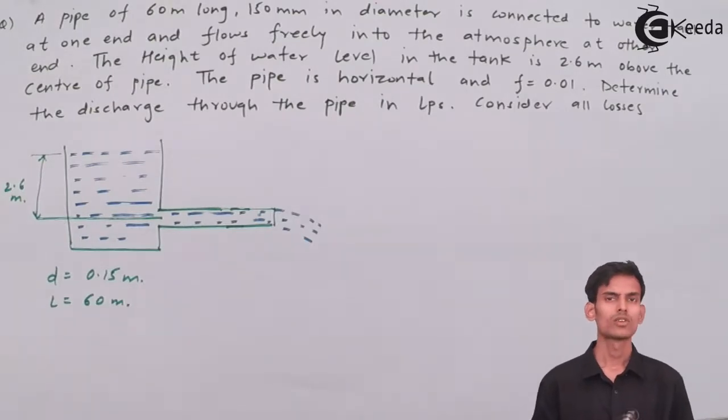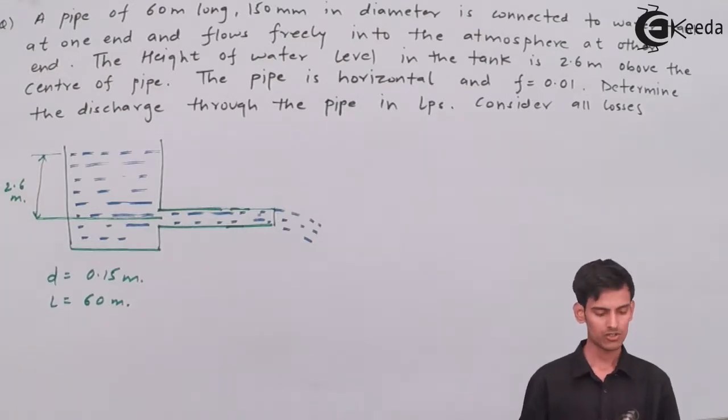The height of the water level above the center of the pipe is 2.6 meters. The diameter of the pipe is 0.15 meters. The length of the pipe is 60 meters.